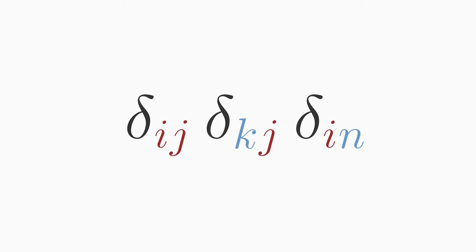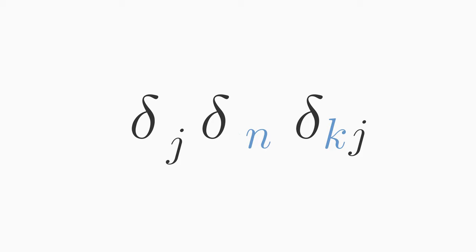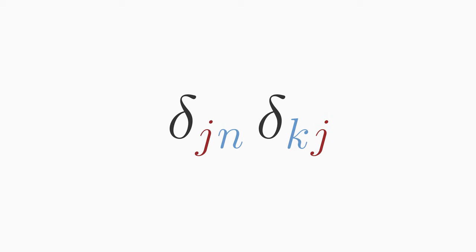Remember that the contraction order is not important here. You could have contracted i first instead of contracting j first. In both cases you get the same result, delta kn. So which way of simplification you take does not matter.